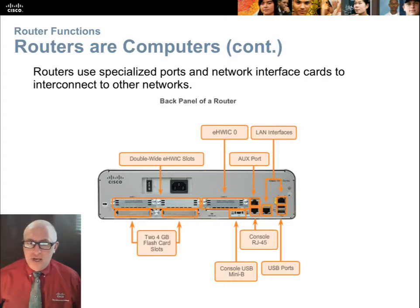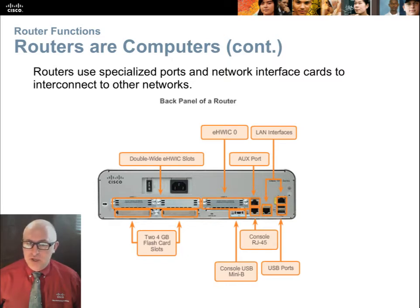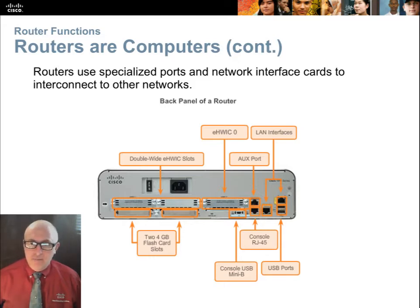There are some built-in ports. The built-in ports you can normally see would be some type of console port for connecting a console cable — this router has two options: you could use an RJ45 rollover cable or a USB cable, similar to a Mini-B standard used with a digital camera. You have some USB ports for flash thumb drives, and in this case, two LAN interfaces.